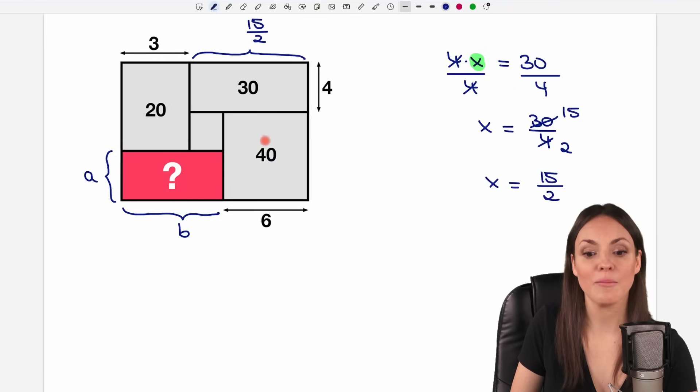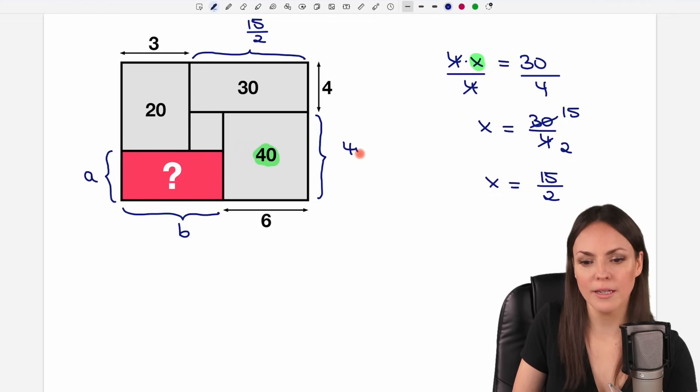Now the same with the other rectangles. So to find this length here we now know that we just have to take the area of the rectangle, the 40, and divide it by the length of the other side. So divide it by 6. We can again reduce this fraction because both numbers are divisible by 2 again. 40 over 2 equals 20 and 6 over 2 equals 3. So in total we have 20 over 3 here.